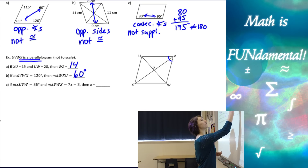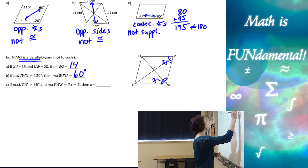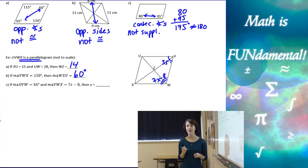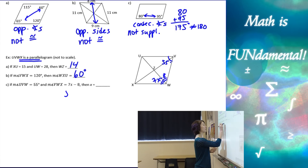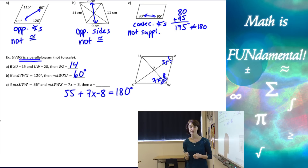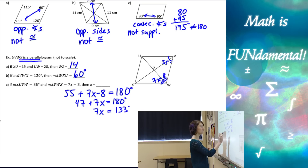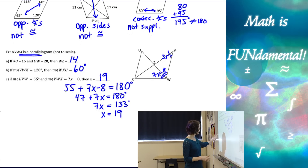Part c: if the measure of angle UVW is 55 degrees and angle VWX is 7x minus 8, we need to find x. Consecutive angles are supplementary in parallelograms, so we add them together and set the sum equal to 180 degrees. That gives us 55 plus 7x minus 8 equals 180, which simplifies to 47 plus 7x equals 180. Subtracting 47 gives 7x equals 133, and dividing by 7 gives x equals 19.